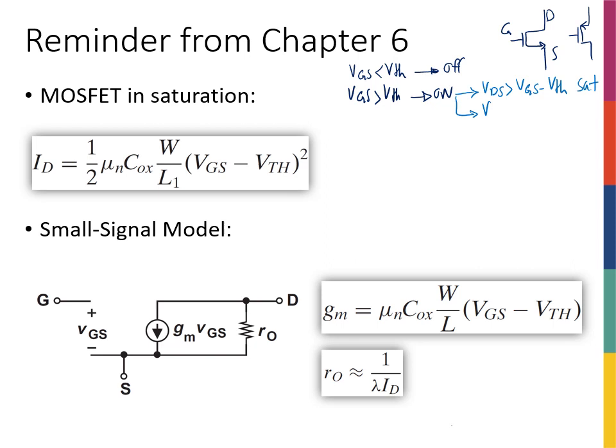If VDS was smaller than VGS minus VTH, the overdrive voltage, we said this is in triode.